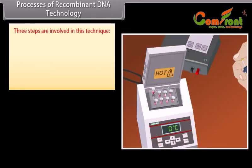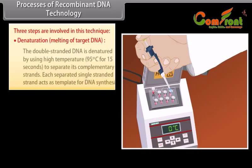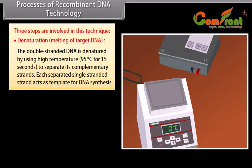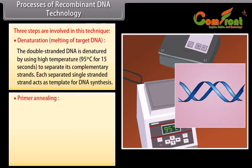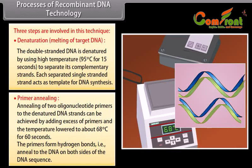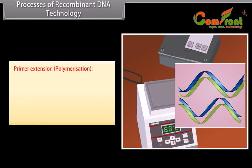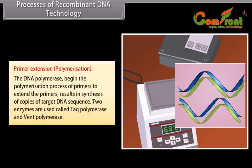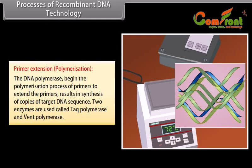Three steps are involved in PCR. Denaturation (melting of target DNA): the double-stranded DNA is denatured using high temperature — 95 degrees Celsius for 15 seconds — to separate its complementary strands. Each separated single strand acts as a template for DNA synthesis. Primer annealing: annealing of two oligonucleotide primers to the denatured DNA strands is achieved by adding excess primers and lowering the temperature to about 68 degrees Celsius for 60 seconds. The primers form hydrogen bonds (annealed) to the DNA on both sides of the target sequence. Primer extension (polymerization): DNA polymerase begins polymerization from the primers, extending them to synthesize copies of the target DNA sequence using Taq polymerase and Vent polymerase.